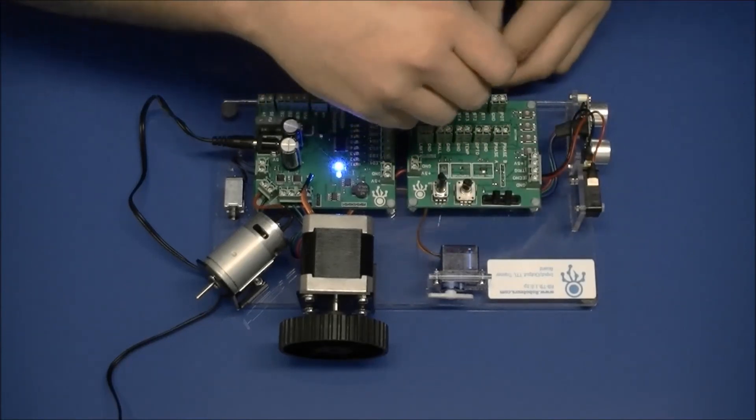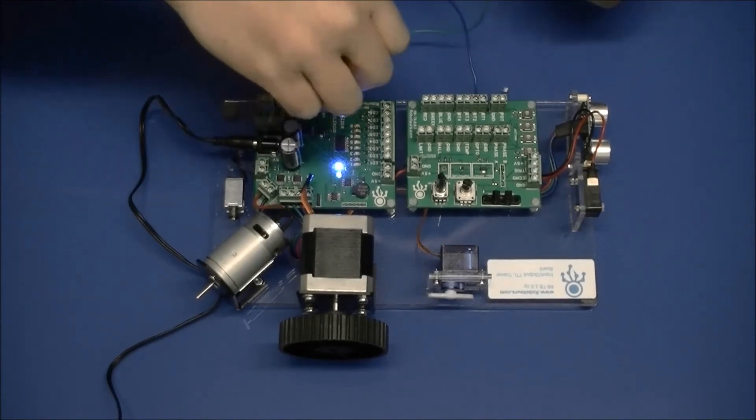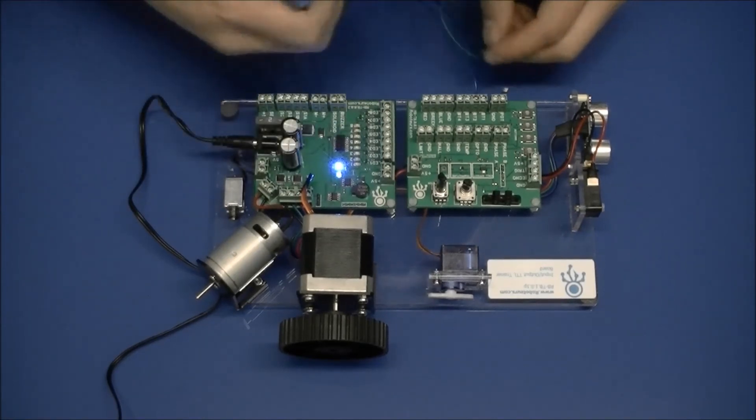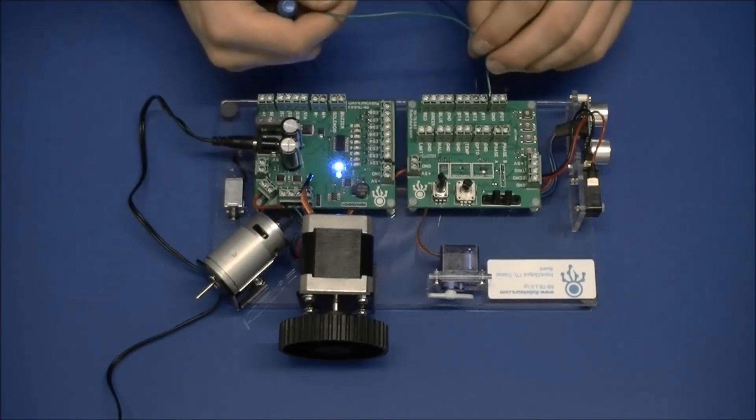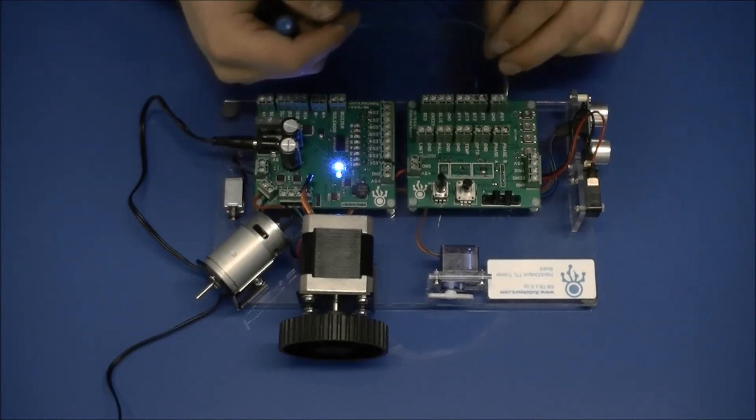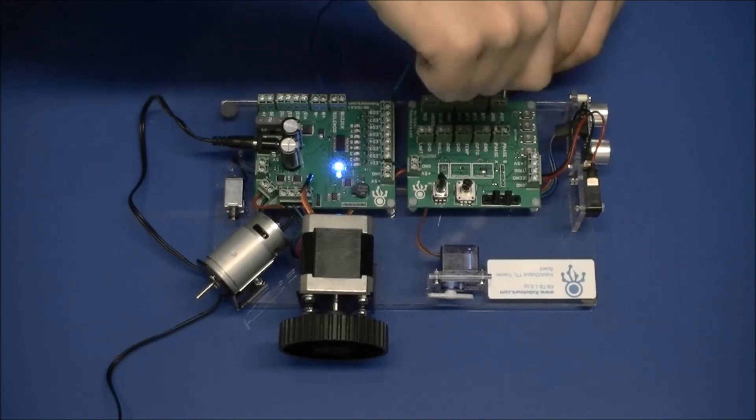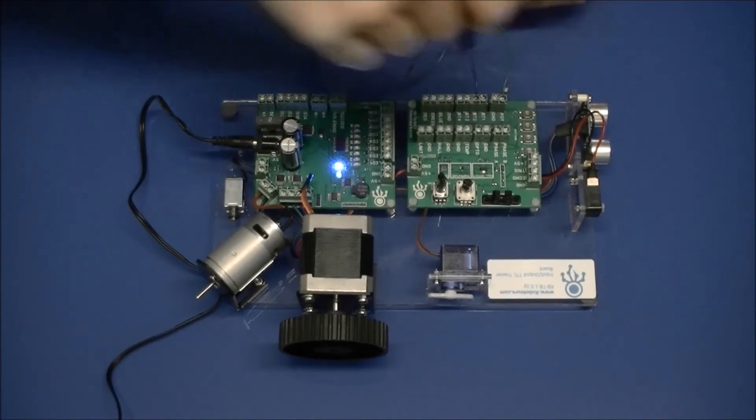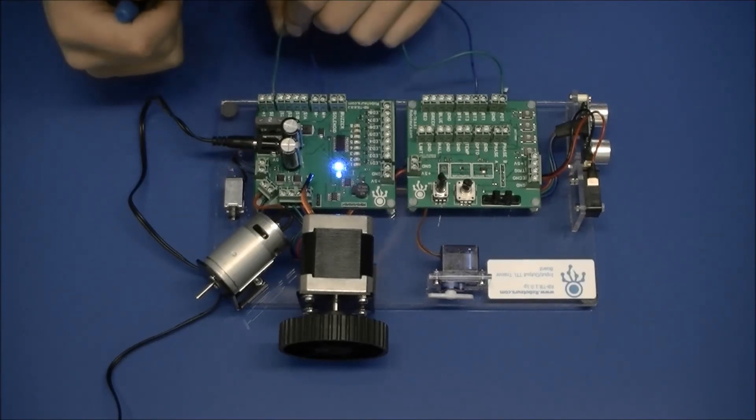For that one we are going to take this wire and we are going to take the potentiometer. The potentiometer gives a reading of 0 to 5 volts and we're going to run that to the one that is labeled as servo.